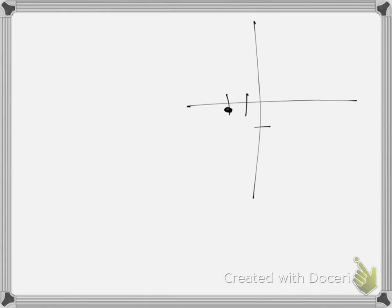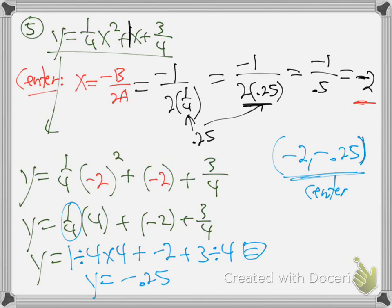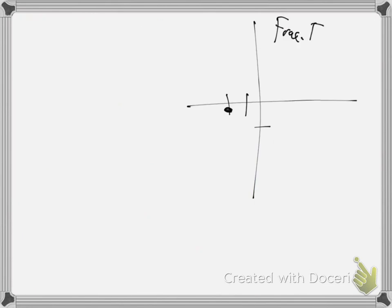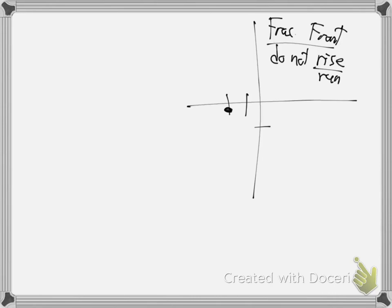So when you have a fraction in the front, don't do the rise over run thing - it only sort of works. Fraction in the front: do not do rise over run. What do you do instead? Find the intercepts. So let's find the intercepts. How do we find x-intercepts? What do we always do? Y equals zero. Take the equation, make y zero.